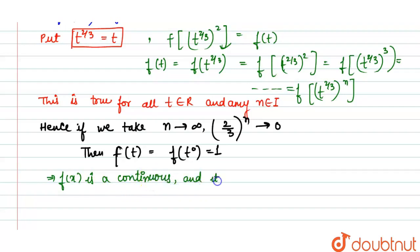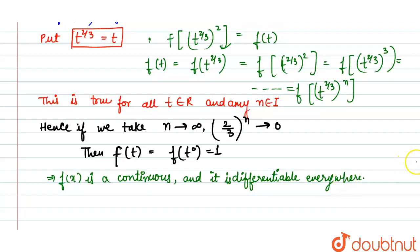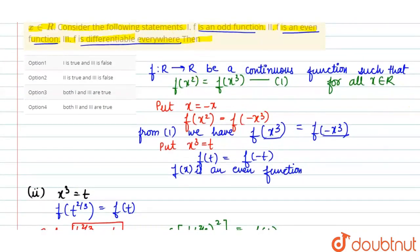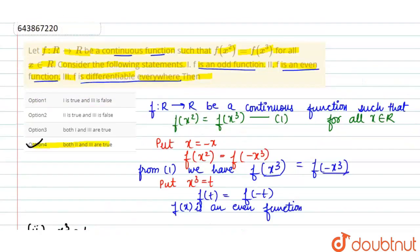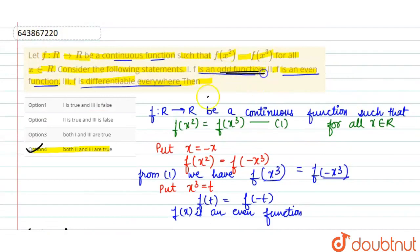f is differentiable everywhere — तो हमारे तीनों parts solve हो गए। Option number D correct है: both second and third are true, because f is differentiable और even function भी है। Odd function यह नहीं है। Thank you.